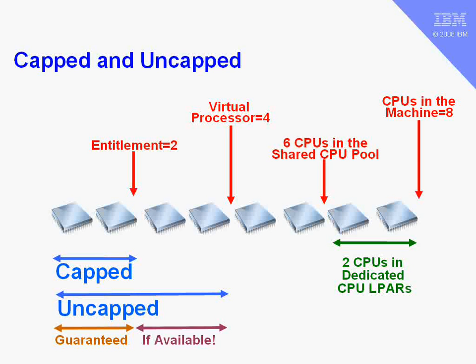If the logical partition is capped, it will get up to its entitlement — in this case two CPUs. It may be spread across four CPUs, but then it is stopped. The logical partition will be taken off the processor once it's used its entitlement, and it will just have to wait — even if there are unused CPUs in the machine — until its next time slice. If it is uncapped, our logical partition can use up to four CPUs because that's the virtual processor count limit. Its entitlement is guaranteed. Above its entitlement, it can only get CPU time if it's available — either CPUs in the pool not allocated at all, or CPUs allocated to a partition that has yielded the processor.